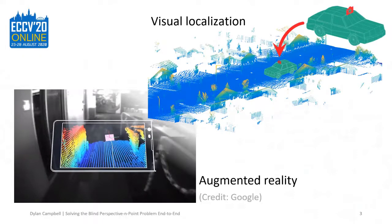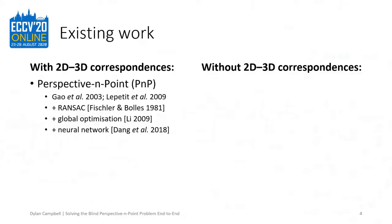While a fundamental technique for many computer vision and robotics applications, including visual localisation and augmented reality, the camera pose estimation problem remains challenging and has not yet been satisfactorily solved. Existing approaches assume that noisy correspondences are provided, that a good pose prior is available, that the problem size is small, or that training images from the test scene are available.